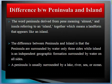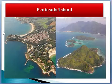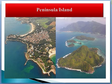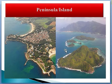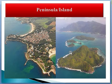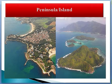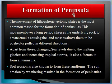A peninsula is usually surrounded by a lake, sea, or ocean. As you can see in this example, the peninsula is a portion of land surrounded by water on three sides but connected with the mainland on one side. An island, on the other hand, is completely surrounded by water with no connection to the mainland.